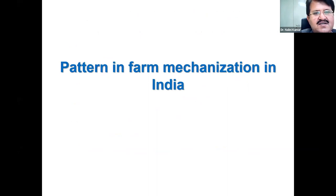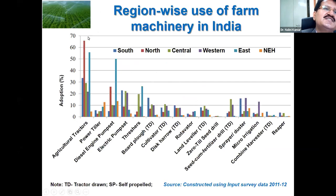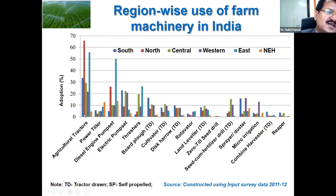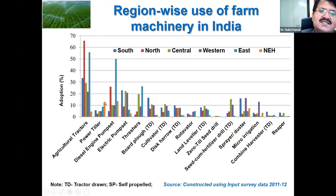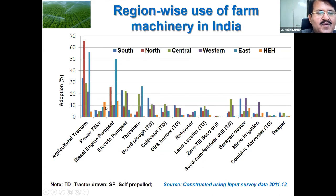What is the status of farm mechanization in our country? If we see region-wise use of farm machinery in India, agricultural tractor use is highest in the north, with 66–67% of farmers using tractors, while in the south it is only about 32% and lowest in the north-east (NEH region). Power tiller use is highest in NEH, mainly due to the unfavorable terrain requiring this low-weight tractor.